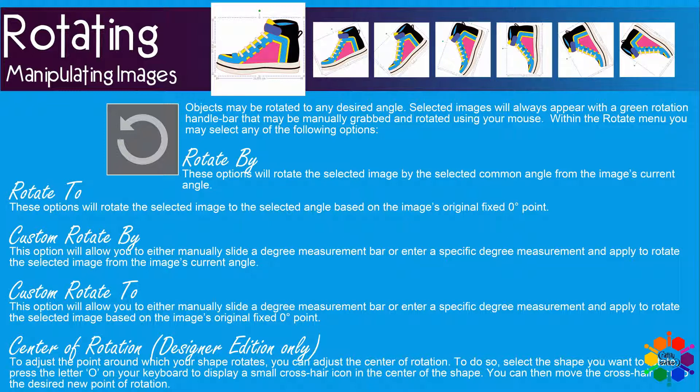Custom Rotate To. This option will allow you to either manually slide a degree measurement bar or enter a specific degree measurement and apply to rotate the selected image based on the image's original fixed zero degree point.